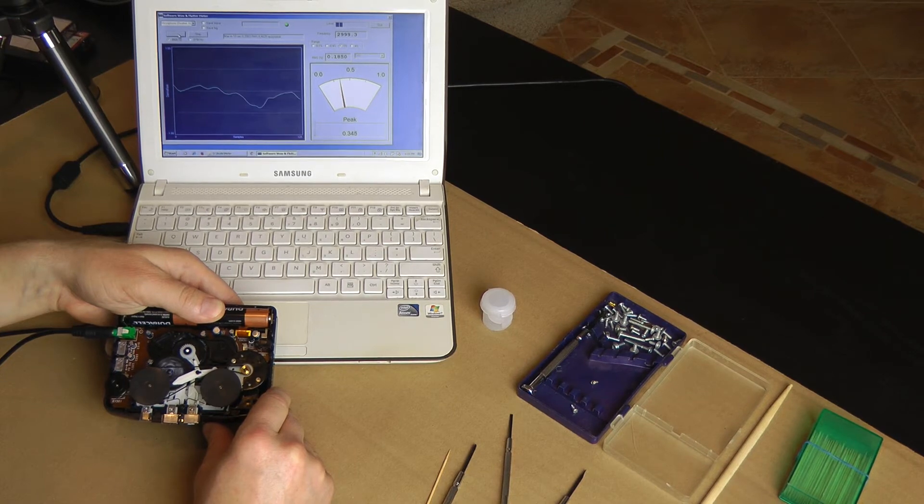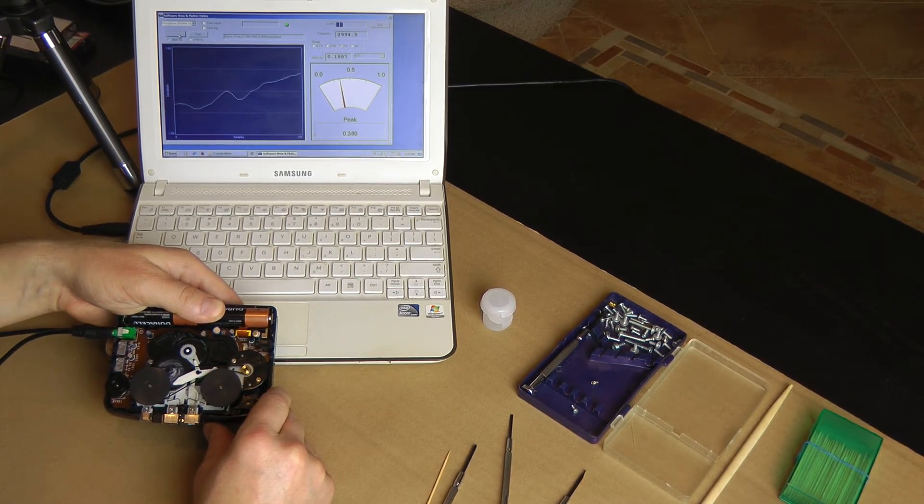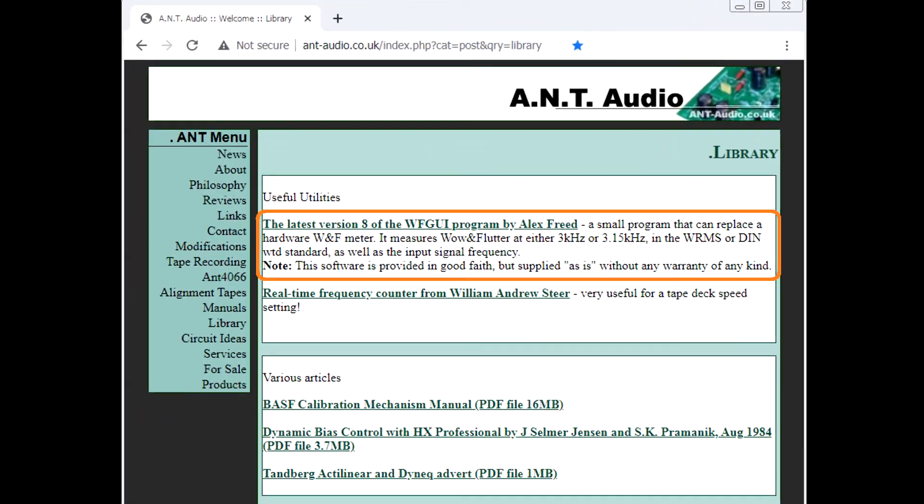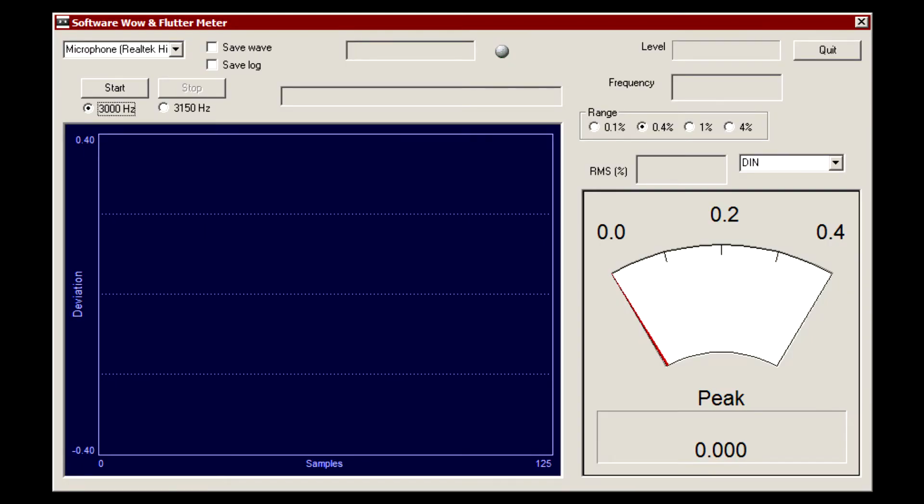Nowadays, everyone who owns a computer can measure Wow and Flutter of the Walkman cassette deck or record player. Download WF GUI developed by Alex Fried. It's a free Wow and Flutter meter. Its user interface is just a single window.